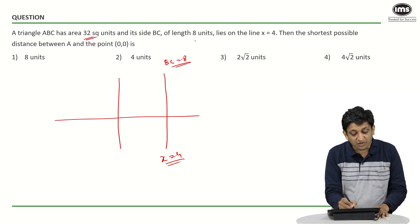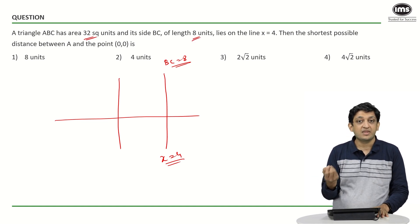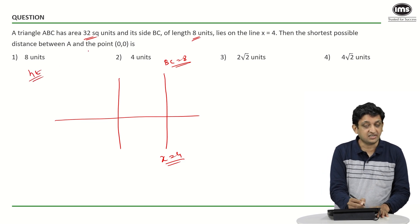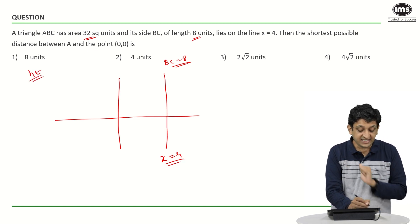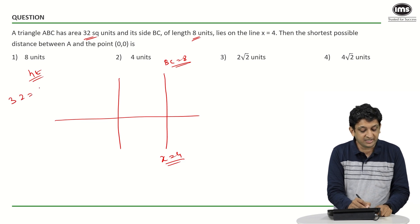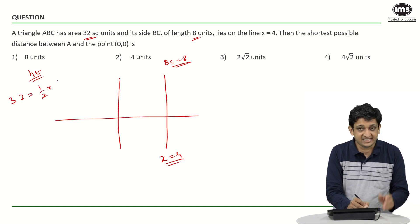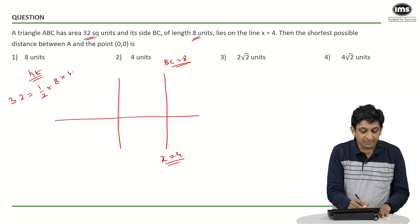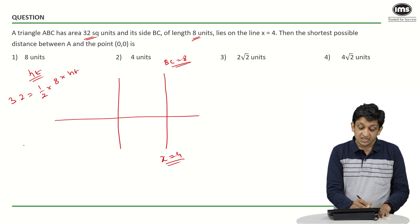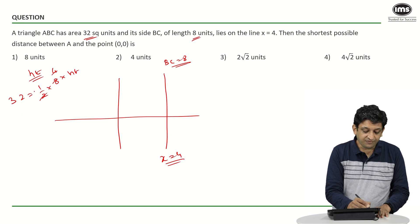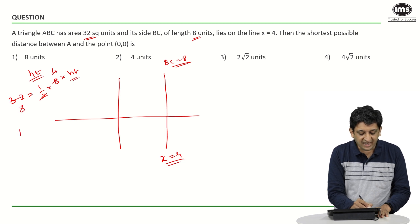One thing we have to understand is that the area of this particular triangle is 32 square units and one of the sides is of length 8 units. So what can we say about the height of this particular triangle? If you consider BC as the base, we know that 32 equals half times BC, the base that is 8, multiplied by the height of the triangle.